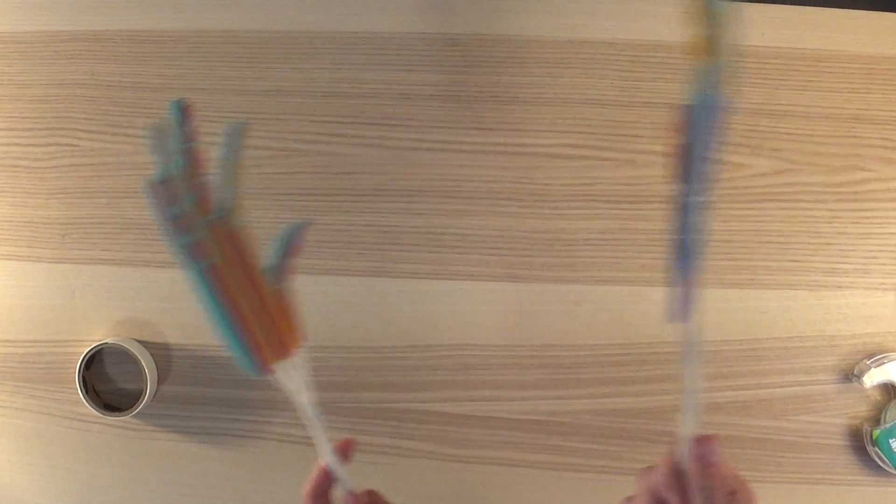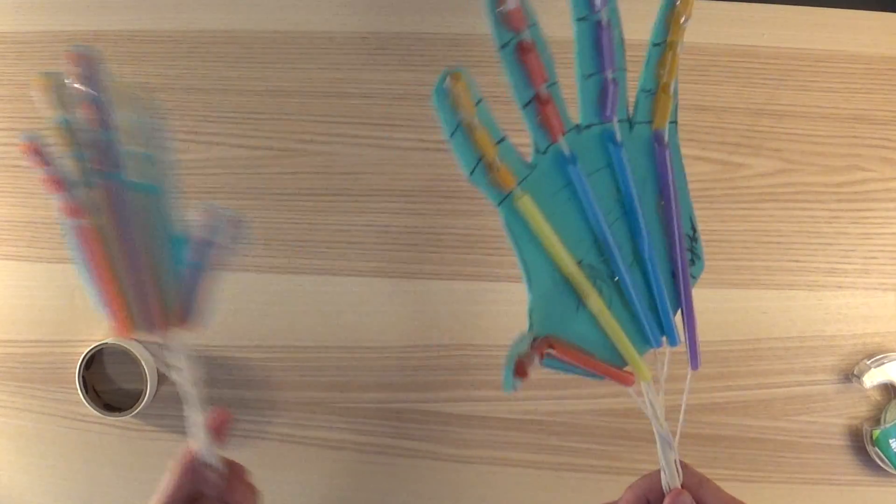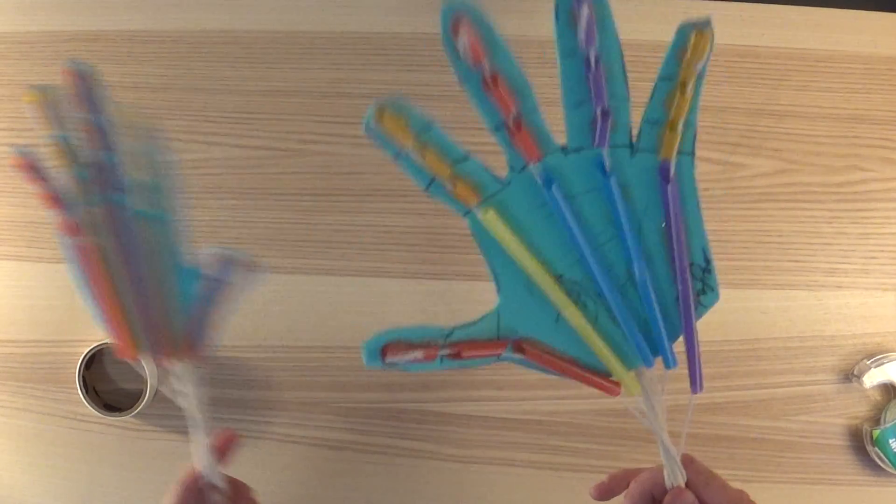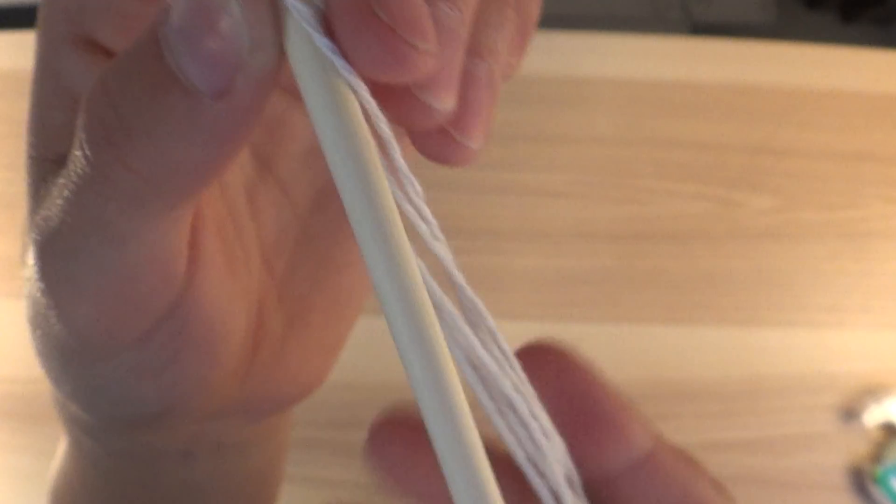Watch as the articulated hand moves like your own hand does, with each finger segment bending down individually. This is because bones, or straws in this case, provide support for the foam hand. I hope that this video gives you a new appreciation for the biology of our hands.